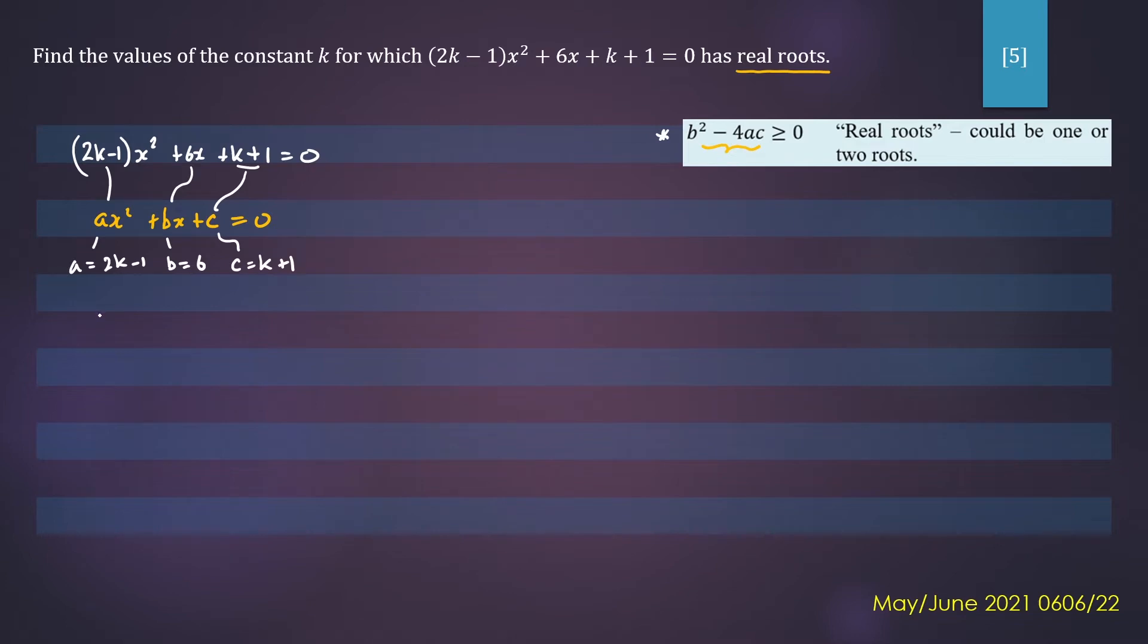So we have b², which is 6², minus 4 times a, which is 2k - 1, times c, which is k + 1, greater than or equal to 0. So we have an inequality to solve.